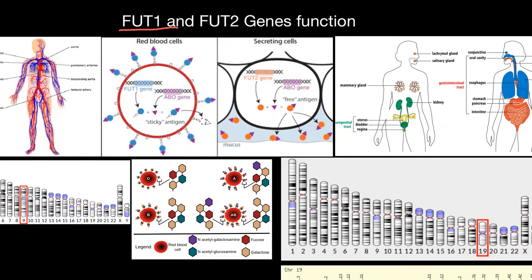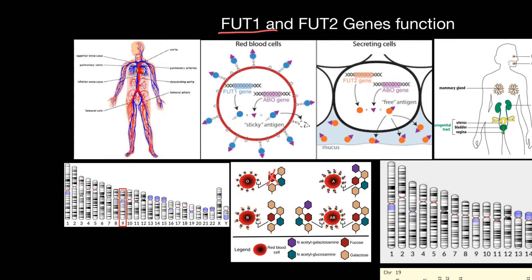We say that FUT1 is epistatic to the ABO gene. If FUT1 has two non-functional alleles, no matter whether the ABO gene produces functioning enzymes, those enzymes would not be able to perform the function of adding terminal sugars. So we call FUT1 epistatic to ABO.